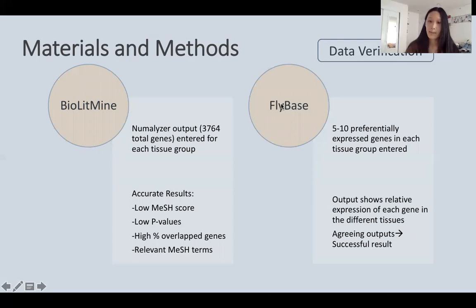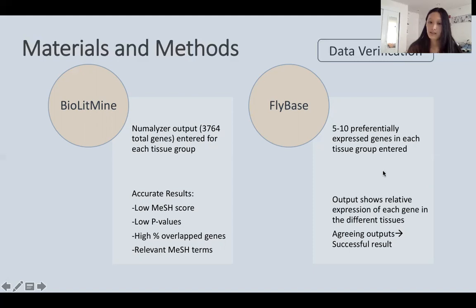FlyBase was the other platform used for cross-referencing. FlyBase was the origin of the datasets generated within the study and is the primary repository for genetic material concerning Drosophila. Five to ten preferentially expressed genes in each tissue group were entered, as it was not feasible to input all genes individually. The output shows relative expressions of each gene in different tissues, scaled to the maximum expression level, and if FlyBase output agrees with NumMalizer output, the result is considered successful.